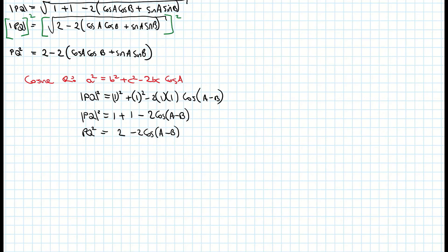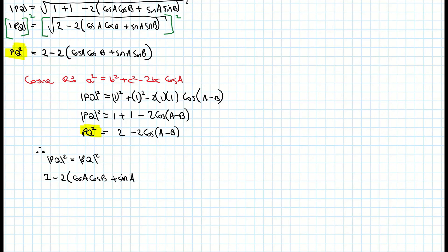Now, since both expressions equal PQ squared, I can set them equal to each other. Therefore: 2 minus 2 times (cos A cos B plus sin A sin B) is equal to 2 minus 2 times cos(A minus B).